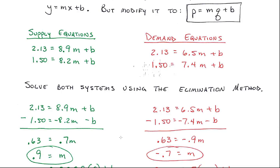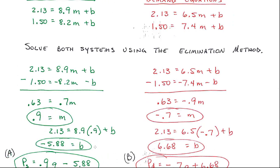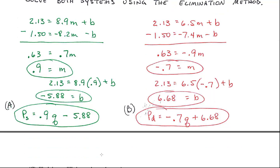But remember, when you do the elimination method, you've got to take that value, put it back into one of the equations, and I took it back to the very first one to find my y-intercept. So this is my supply equation, and this is my demand equation. I use these sub-values, so I'll know which one's which. So P sub S is my supply equation, and P sub D is my demand equation.